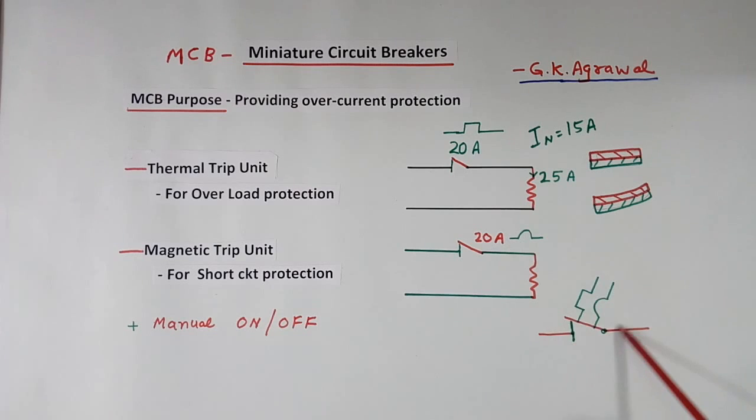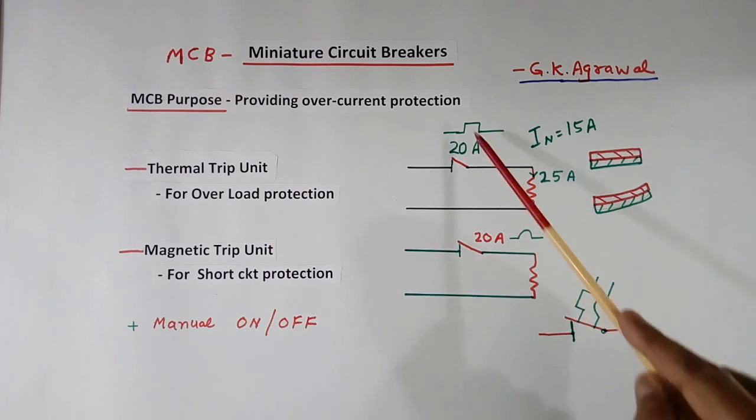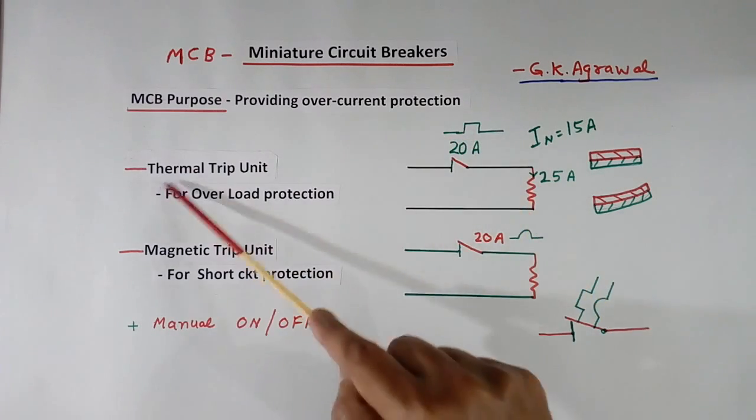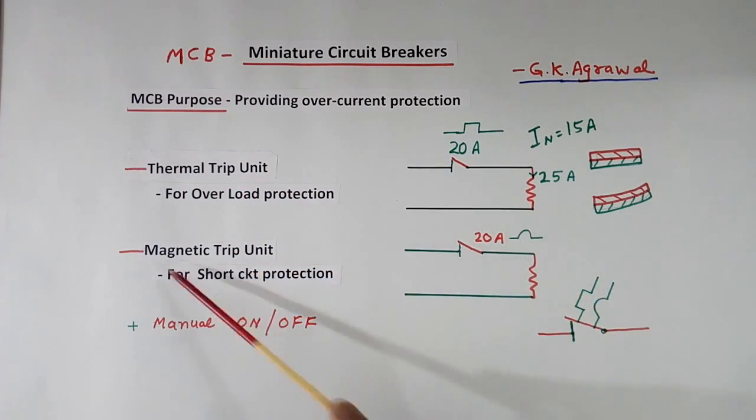Generally this symbol may be many types. So what we do, when we make a drawing, in the first sheet itself we will write down the meaning of this symbol is this, meaning of this symbol is this, so a person can understand.